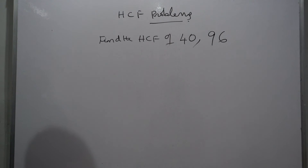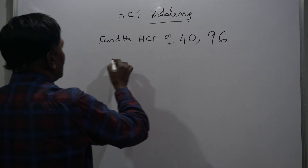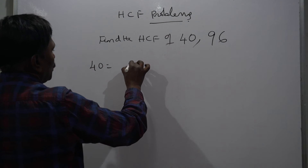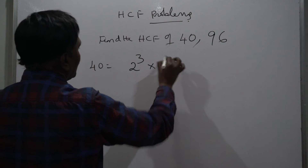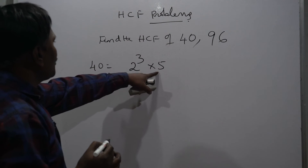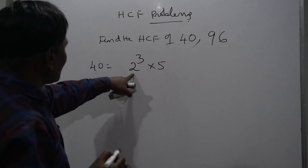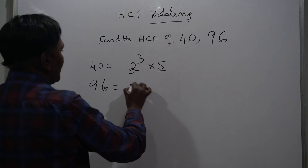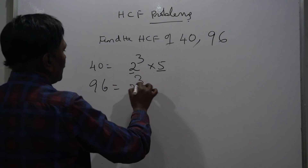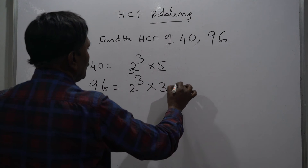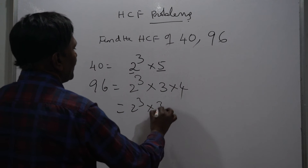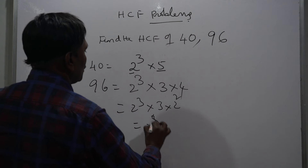Find the HCF of 40 and 96. For 40: 2 and 5 are prime numbers. For 96: this can be 2 cubed into 3 into 4, which gives 2 cubed into 3 into 2 squared, so 2 to the power 5 into 3.